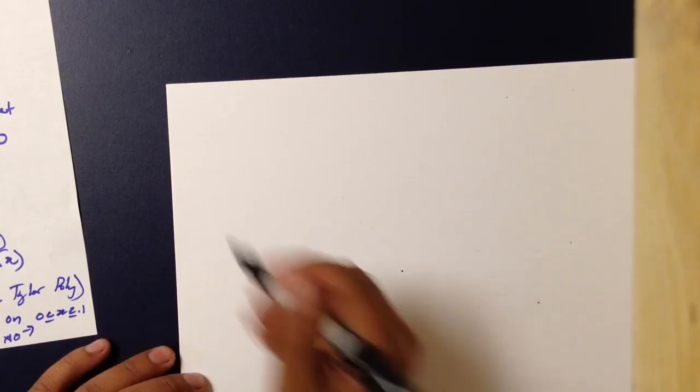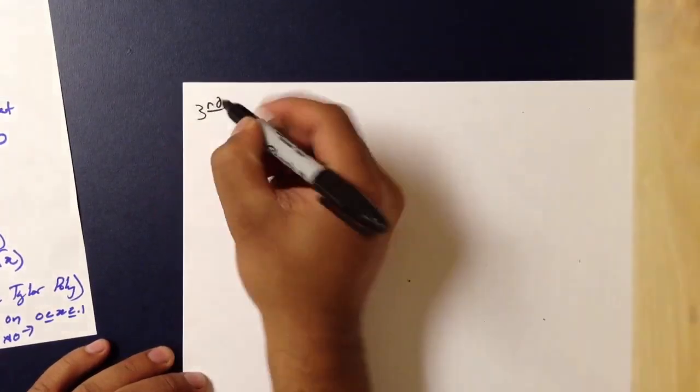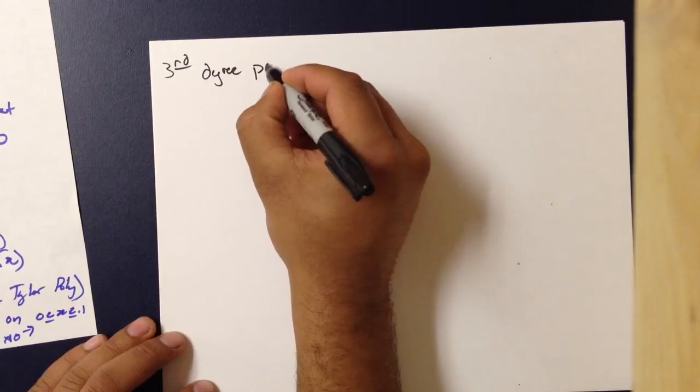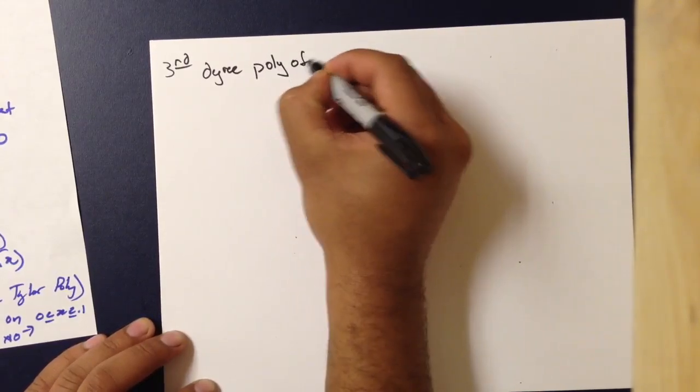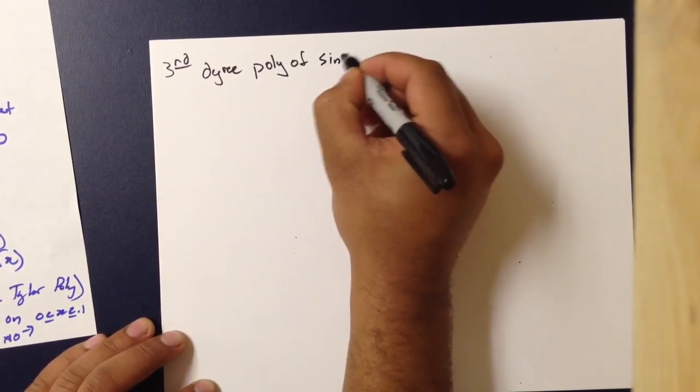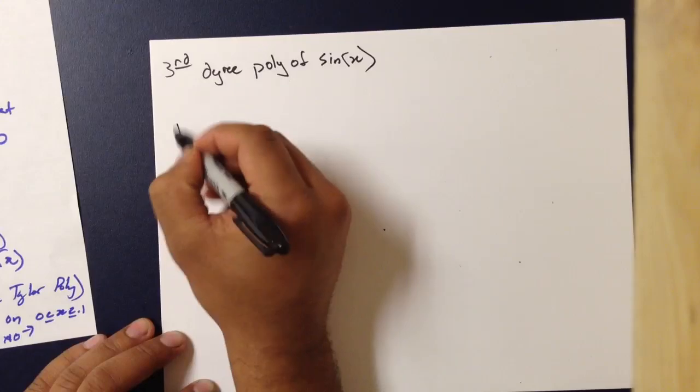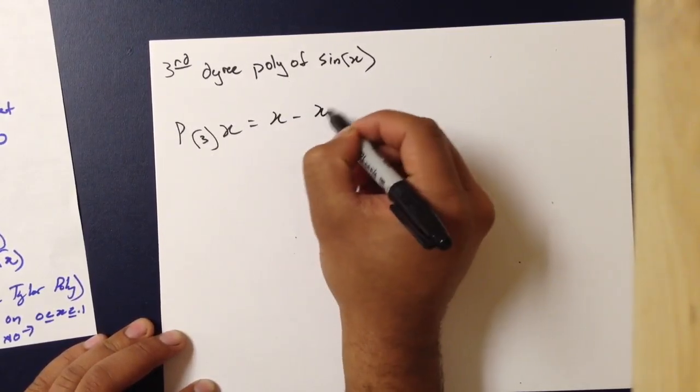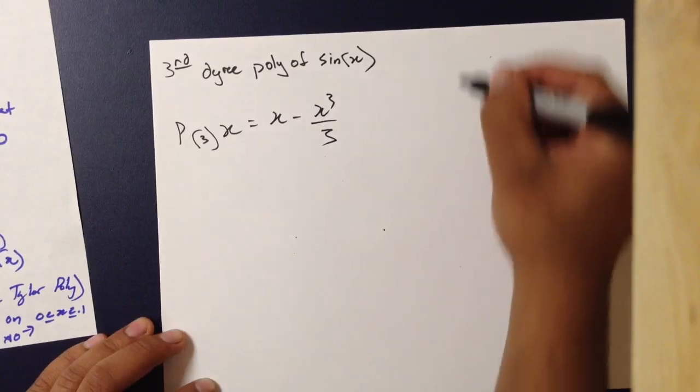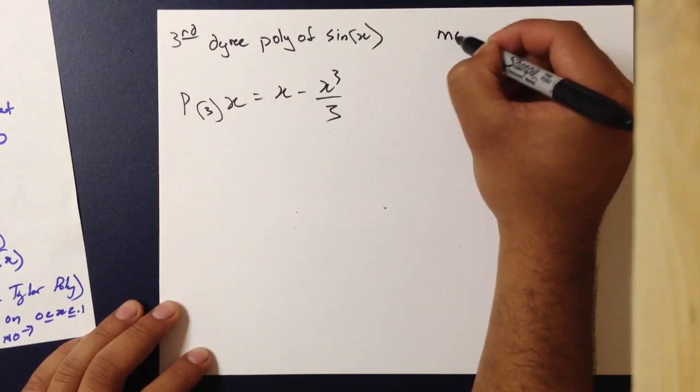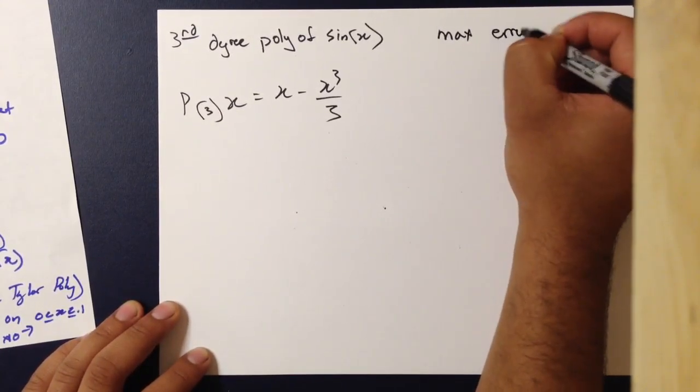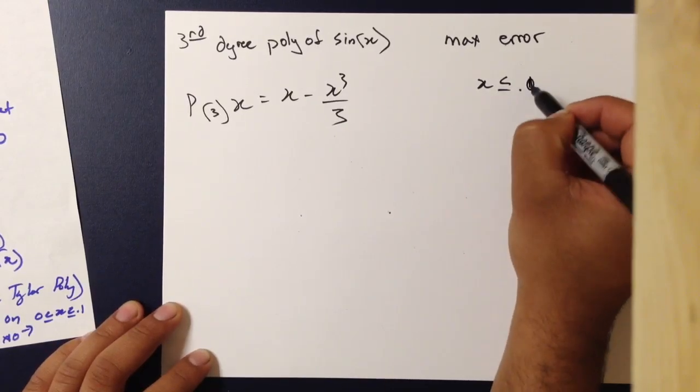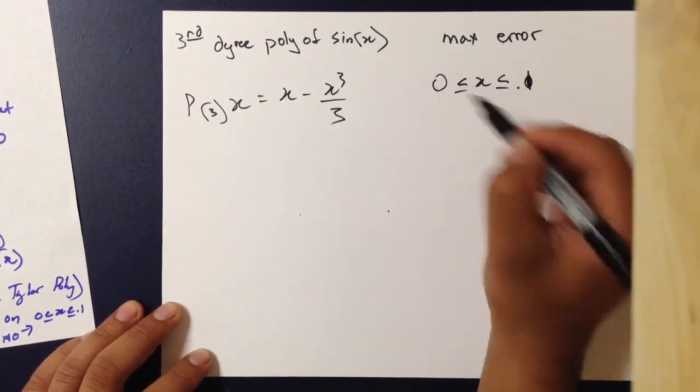So, you're given the third-degree polynomial of sine of x, which is, of course, x minus x cubed over 3. And you're asked to find the max error when x is between 0.1 and 0.